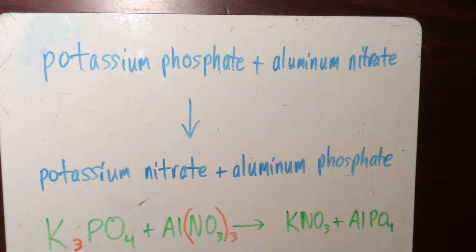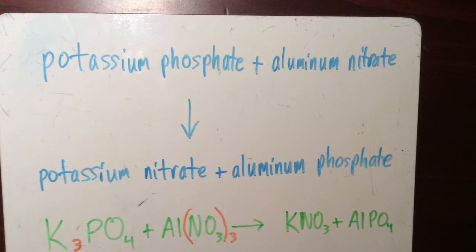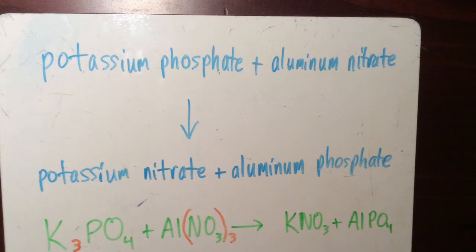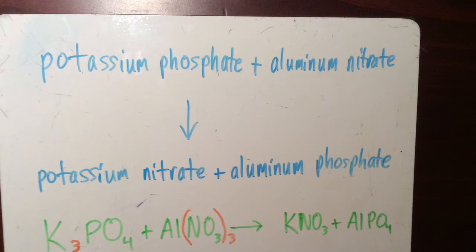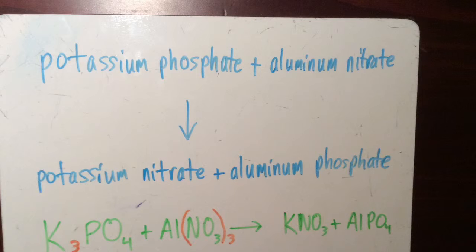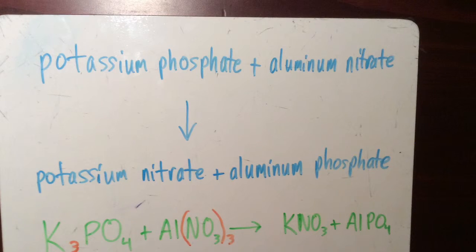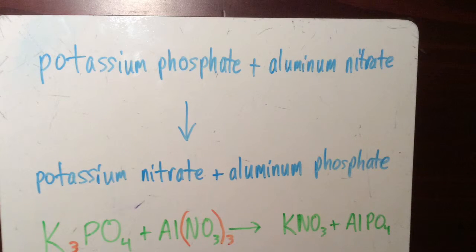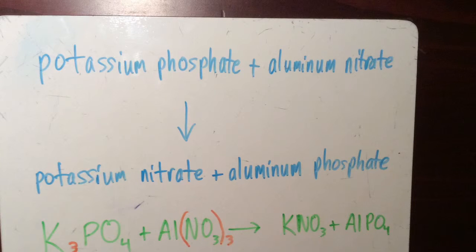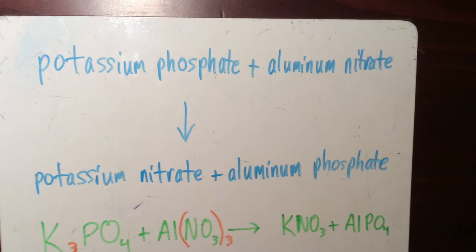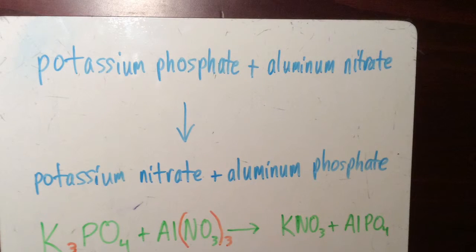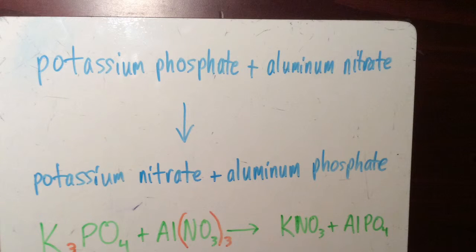Usually, when counting the number of atoms for each element on each side of the equation, it's easier to keep track of if you group the polyatomic as 1 and treat it like an element. So, for nitrate, you're looking to see if nitrate has the same amount of atoms on both sides and looking to see if there are the same amounts of phosphate on each side.